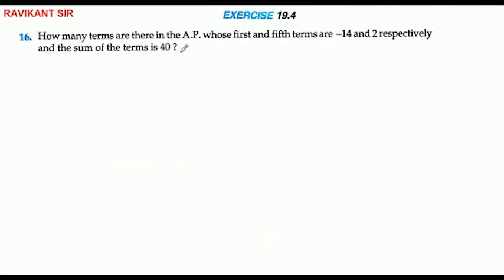How many terms are there in AP whose first term and fifth term are minus 14 and 2, and the sum of the terms is 40?